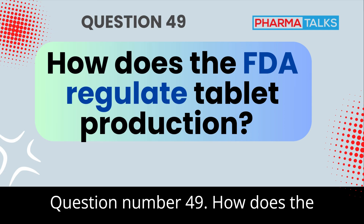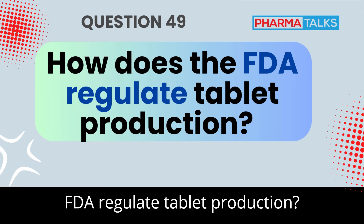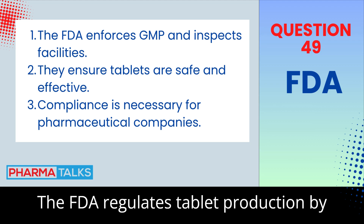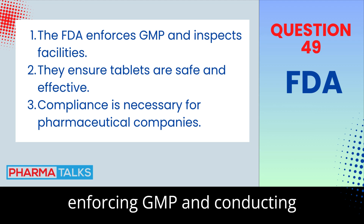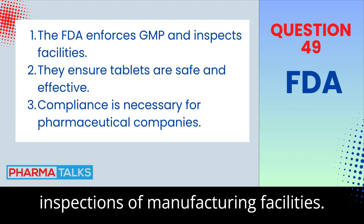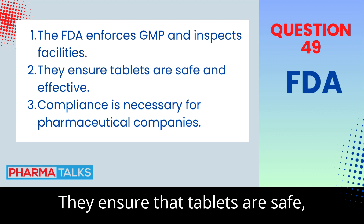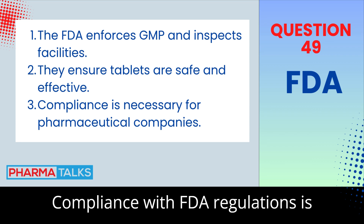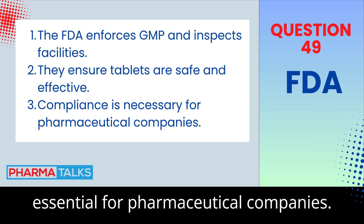Question 49: How does the FDA regulate tablet production? The FDA regulates tablet production by enforcing GMP and conducting inspections of manufacturing facilities. They ensure that tablets are safe, effective, and of high quality. Compliance with FDA regulations is essential for pharmaceutical companies.